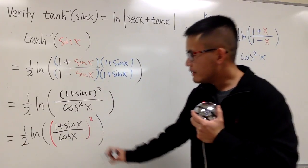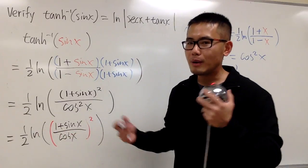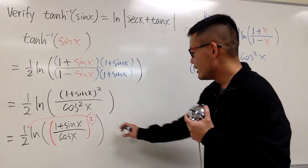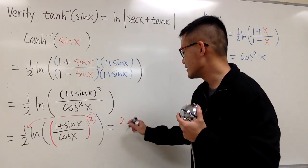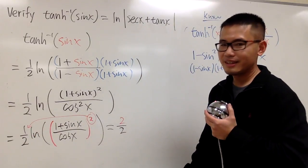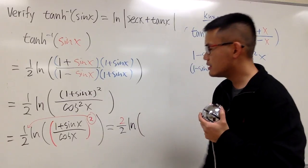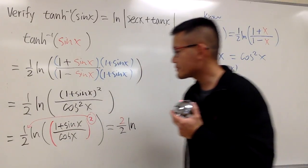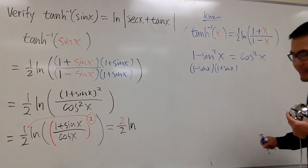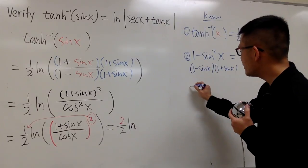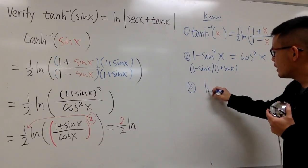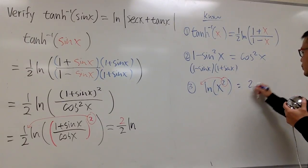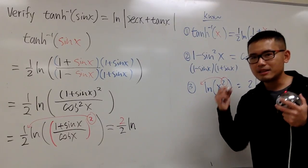By the logarithm power rule, we can bring the exponent 2 to the front: this becomes (1/2) × 2 × ln of (1 plus sin x) over cosine x, and the 2 over 2 cancels to 1. However, there is a small but important detail here — when you have ln(x²) and bring the power out front to get 2 ln x, that changes the domain.